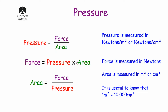If we divide both sides by pressure, that will leave us with area — area is equal to force divided by pressure. So to summarise: pressure is equal to force divided by area; force is equal to pressure times area; area is equal to force divided by pressure.